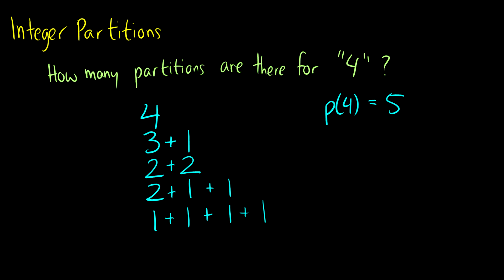This can be exhaustive — if I ask what is p(26), there are a ton of options. So instead we're going to work with generating functions. How do we figure out what the generating function for this is?